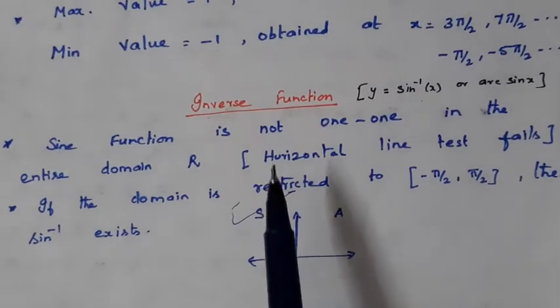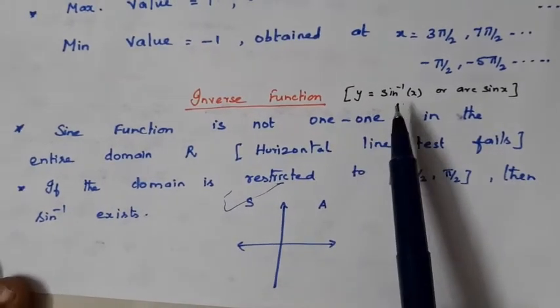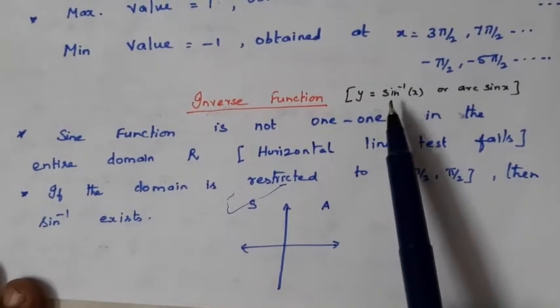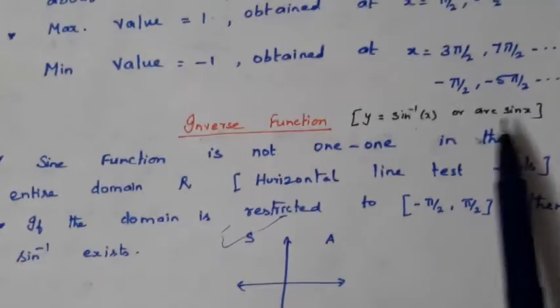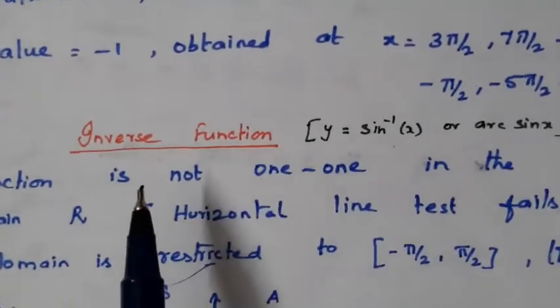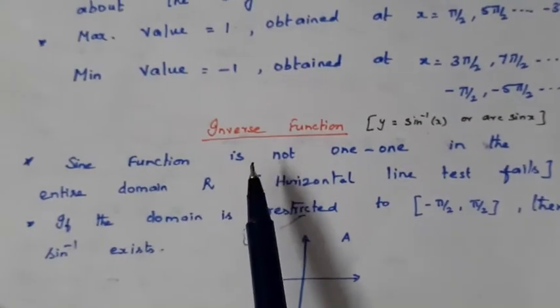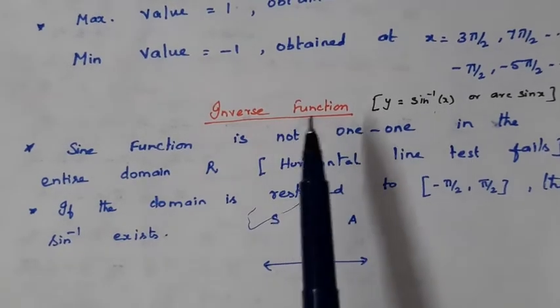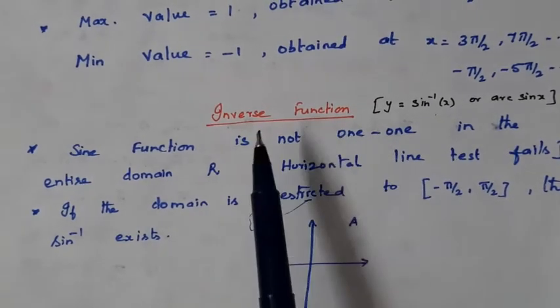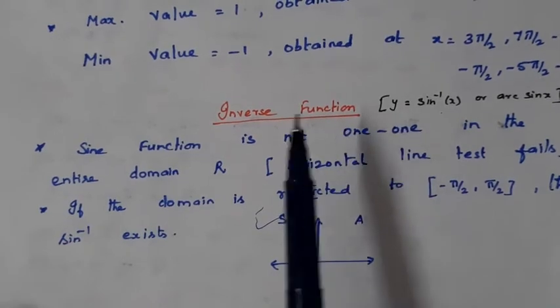Now let us come to the inverse function. The inverse function of sine is denoted by either y = sin⁻¹(x) or arc sin x. An inverse function is possible only if a function is one-to-one and onto — that is, if f is a bijective function, then only f inverse is possible.